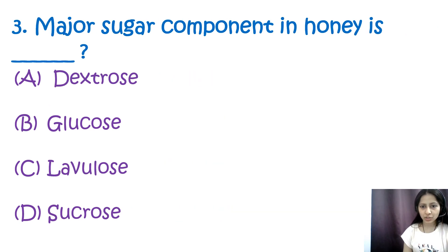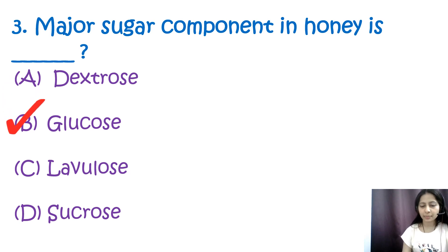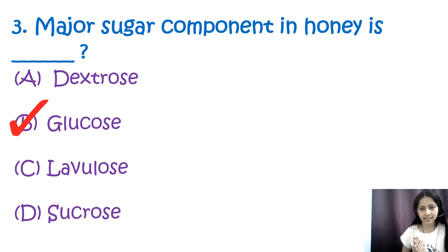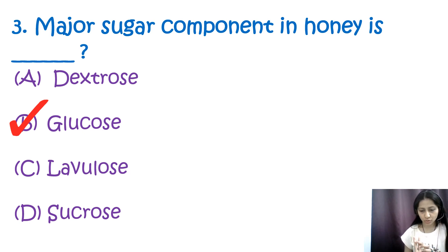Question 3: The major sugar component in honey is — options are dextrose and glucose, and fructose and sucrose. The correct answer is option B, glucose. The two major sugar components present in honey are glucose and fructose. Honey is a concentrated carbohydrate solution containing a mixture of simple and complex sugars, with fructose and glucose being the two main sugars.